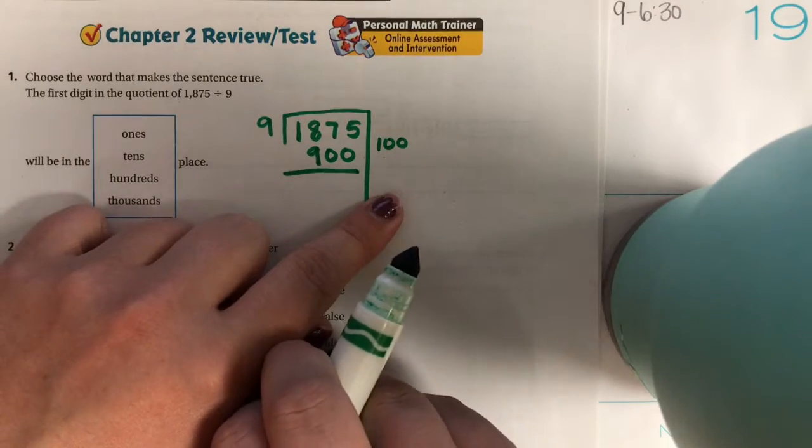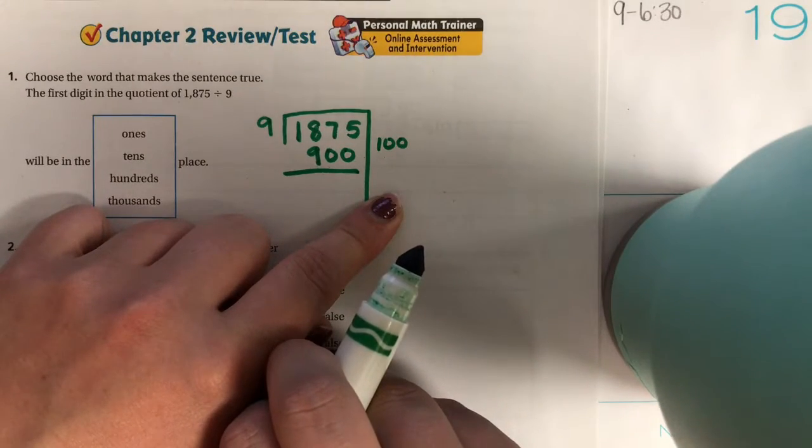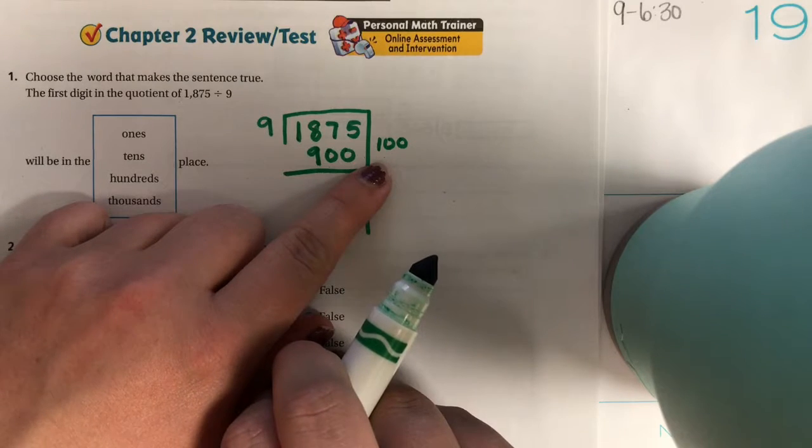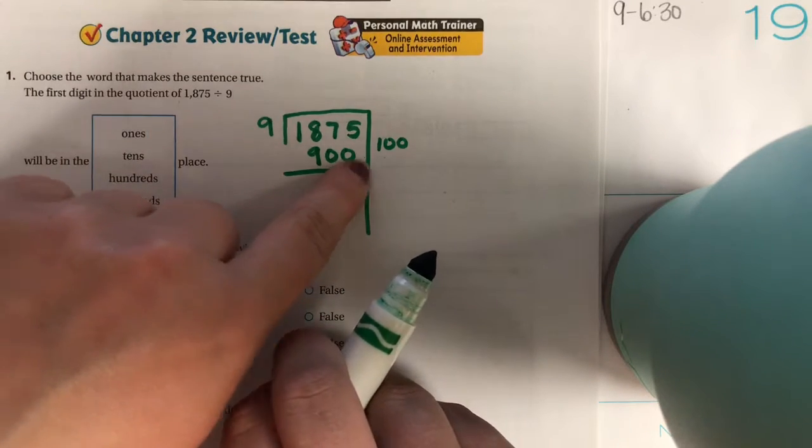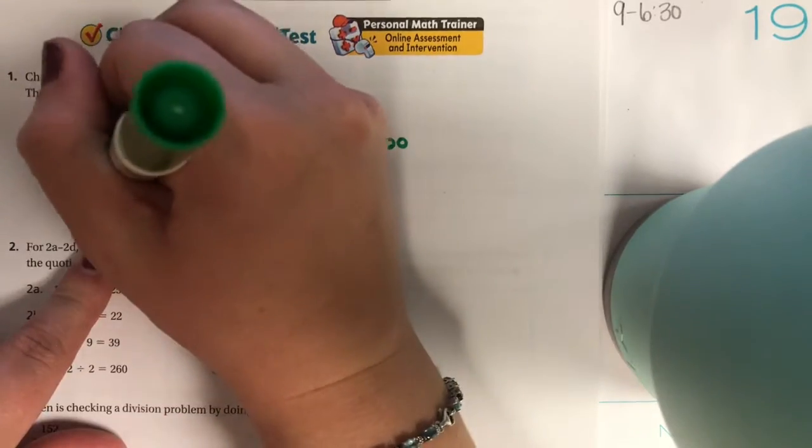Could I take out a group of 1,000? No, because that would be 9,000. So I'm going to say that my first digit is going to be in my 100s place. I don't even have to solve the rest of the problem.